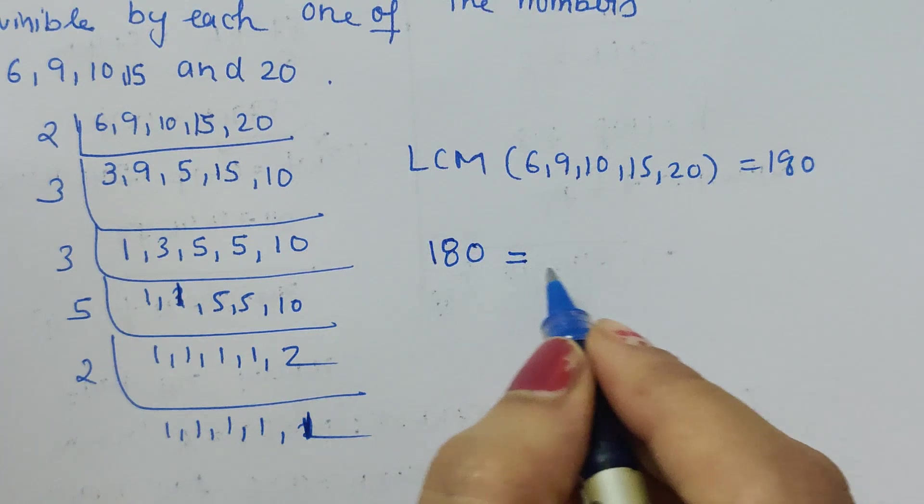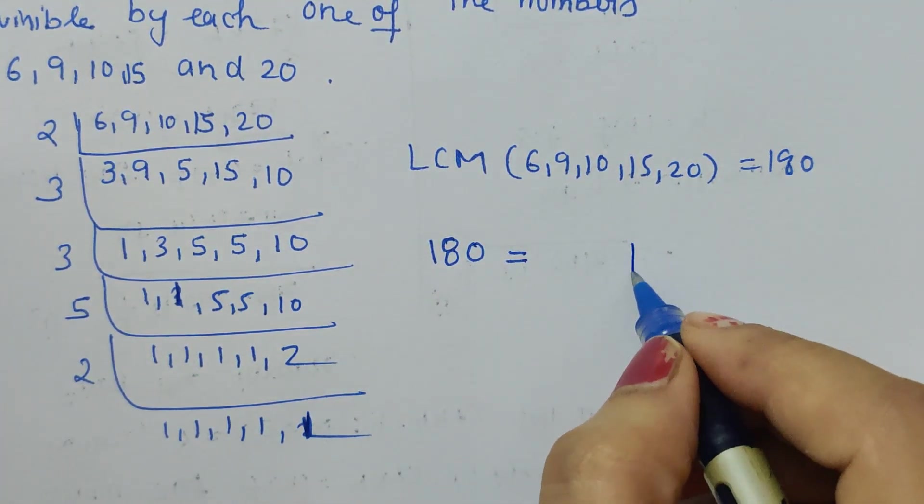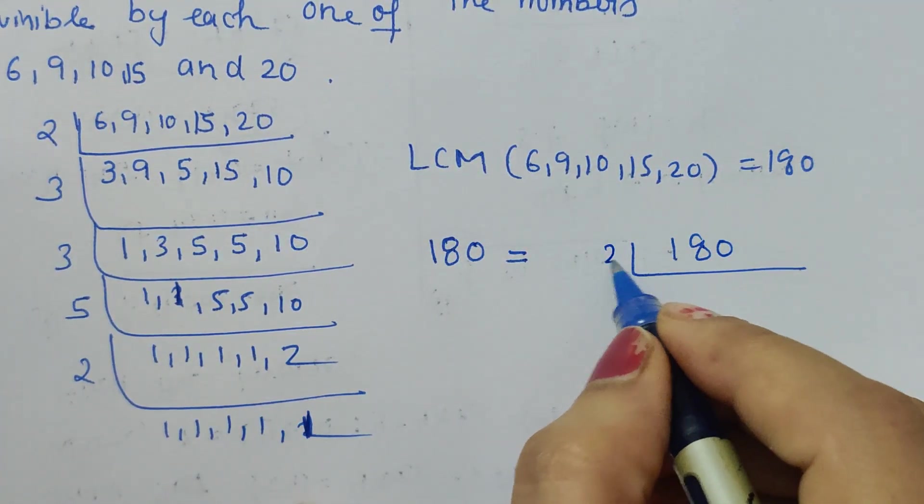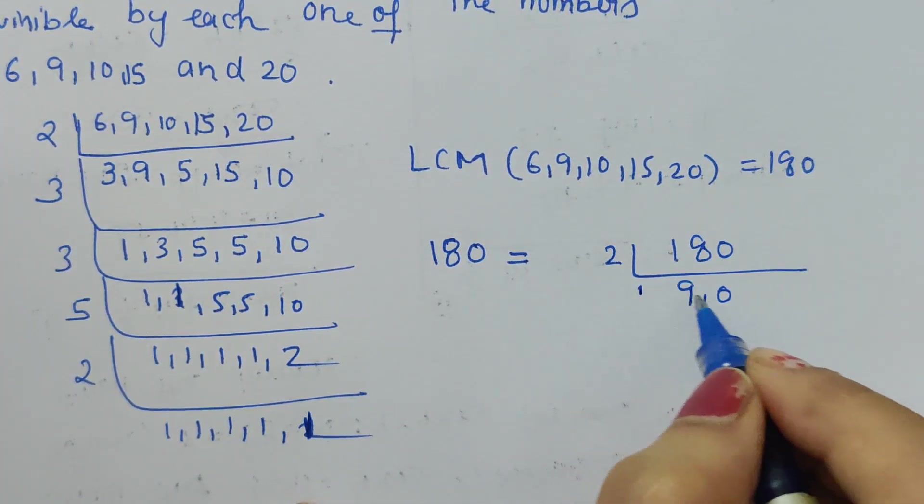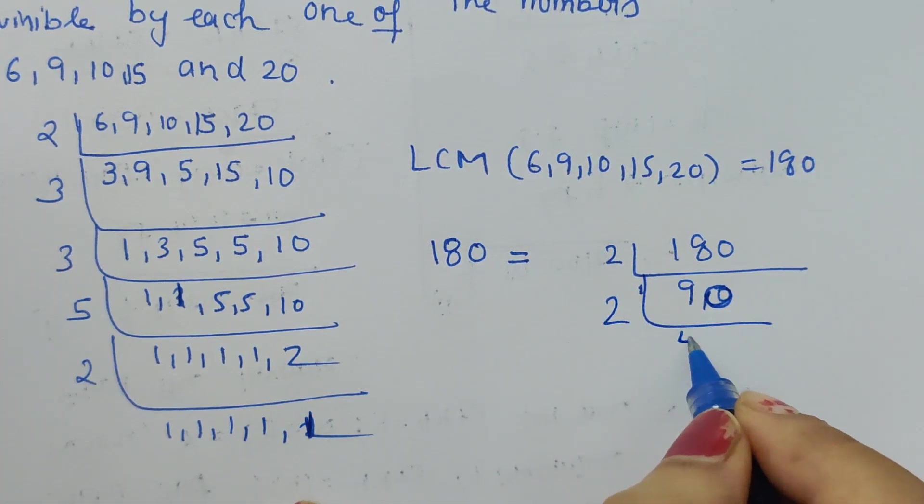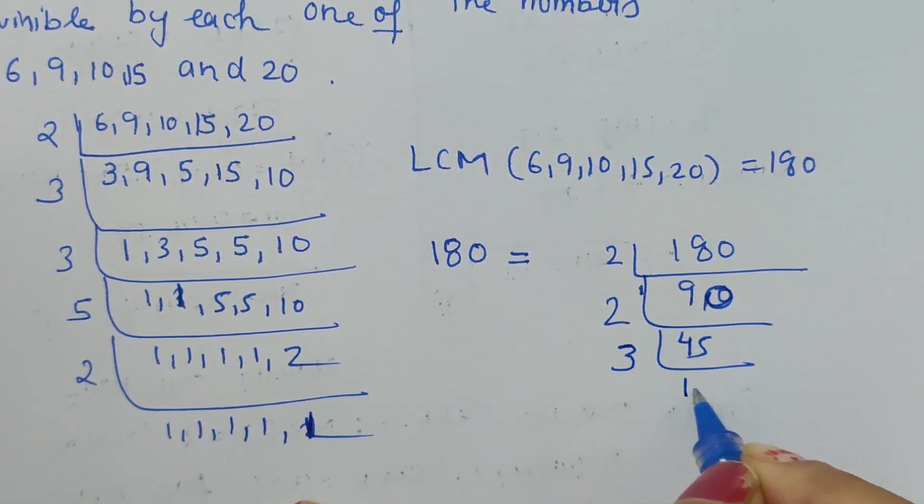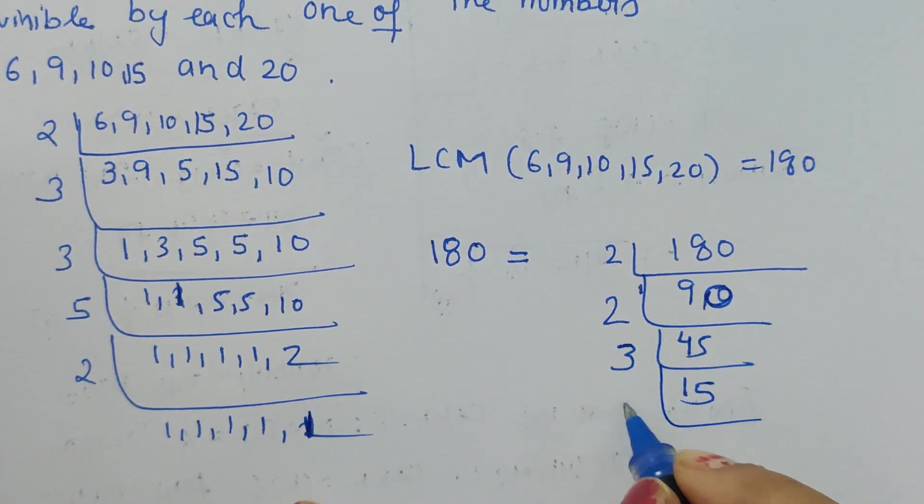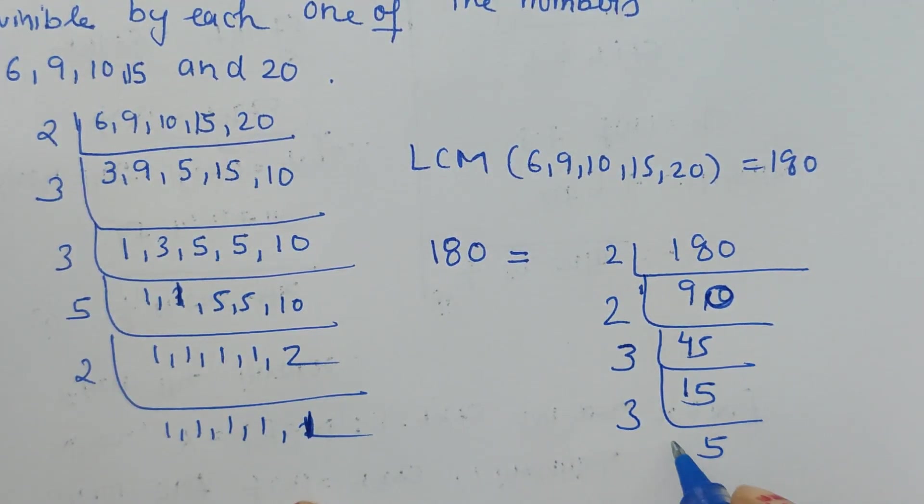180 - how can 180 be written? We have to write 180 in its prime factor form. So let's prime factorize 180. What do we get? 2 goes into 180 giving 90, 2 goes into 90 giving 45, then 3 goes into 45 giving 15, 3 goes into 15 giving 5, and 5 goes into 5 giving 1.